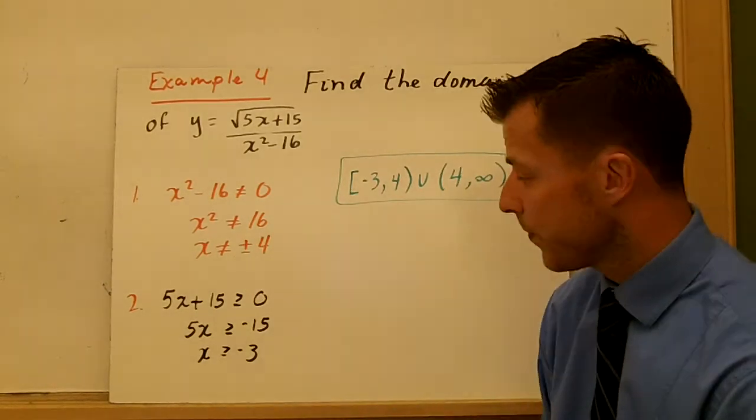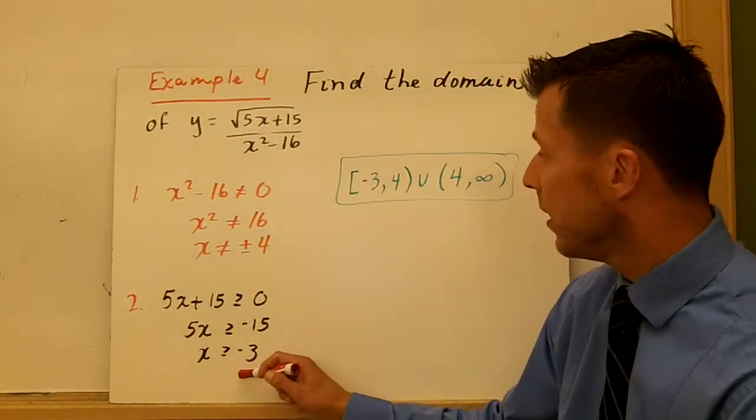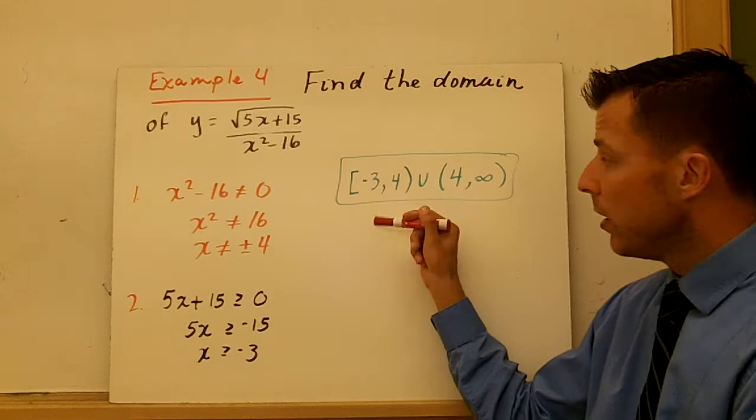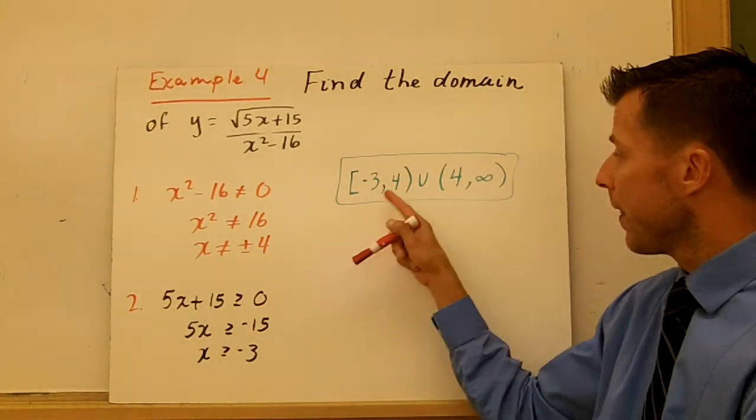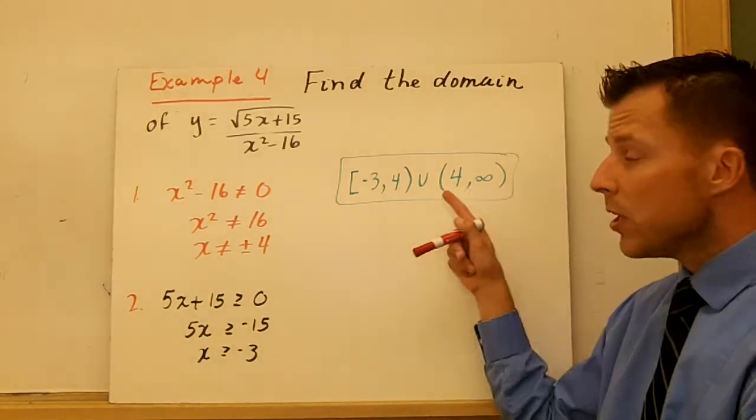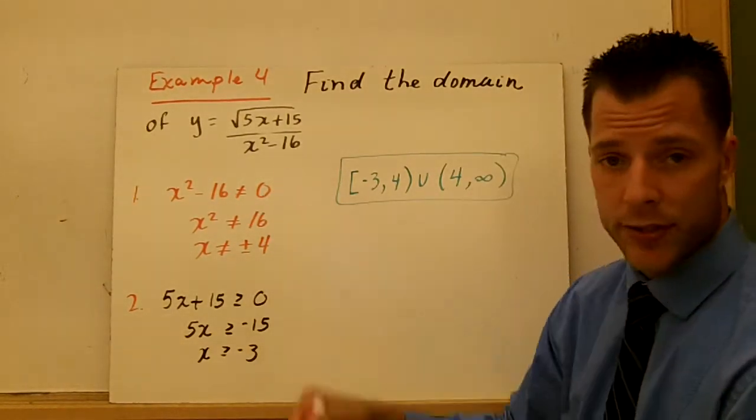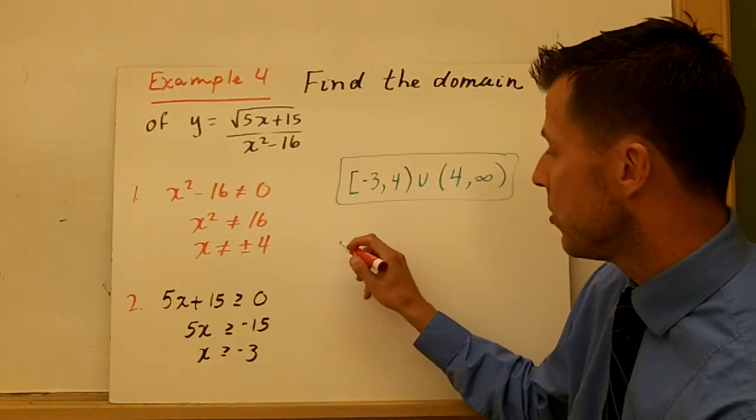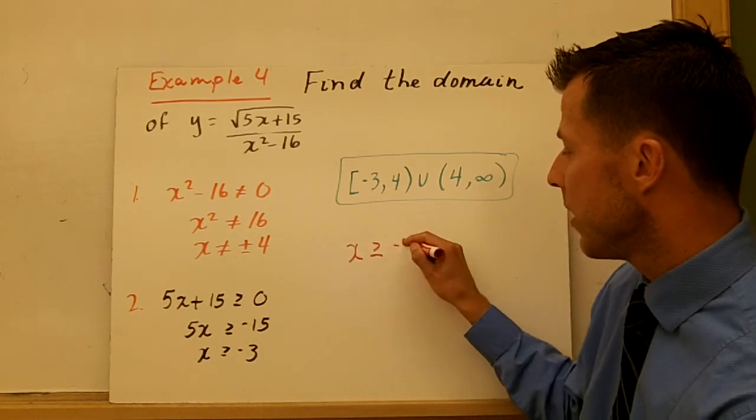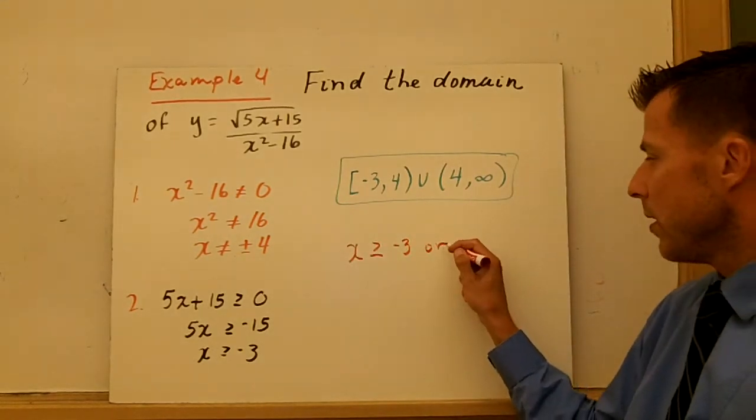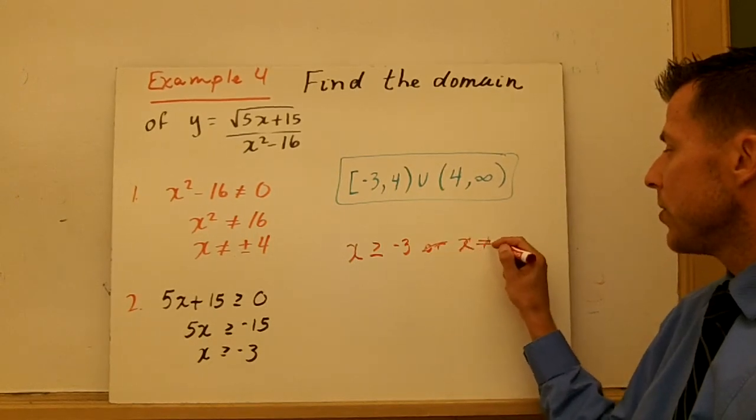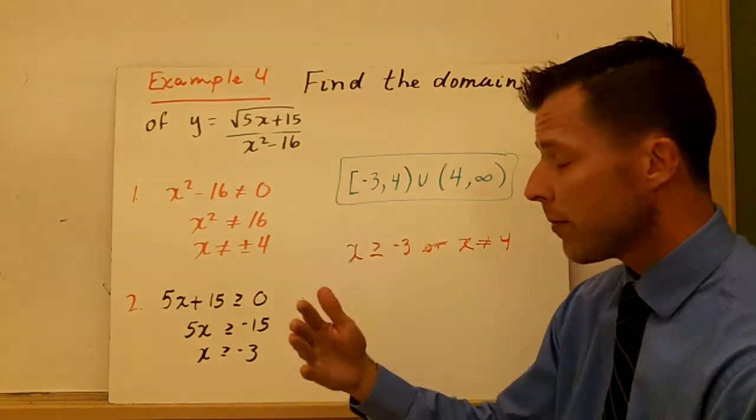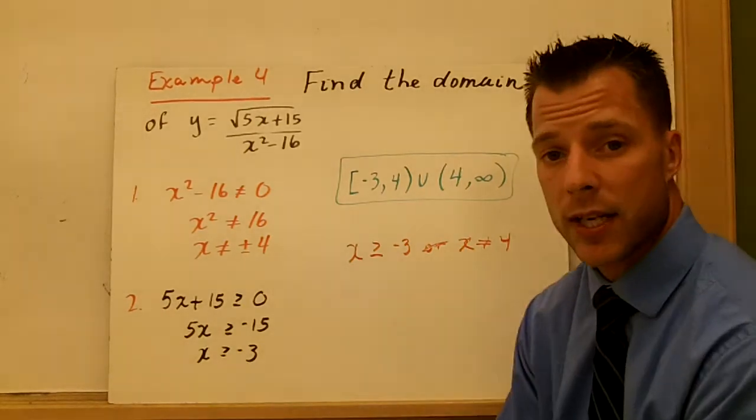So negative 4 is already out. x has to be greater than or equal to negative 3. So I can start at negative 3, and I go to 4. I can't include 4 because of the restriction in union with 4 to infinity. So that is my domain for this example. I have to match, see what my restrictions are, and write them. The other way you could write this is you could have said x is greater than or equal to negative 3, or where x cannot be equal to 4. And that would suffice, too. So you'd be able to say, all real numbers greater than or equal to negative 3, and x cannot be 4.